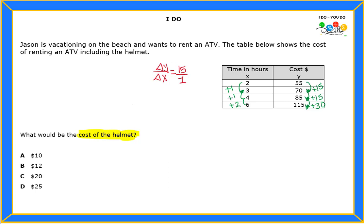Now think about what 15 means. 15 is Y, which is money, and X is hours. So let's see if you can determine a complete sentence for that. This means something like: $15 per one hour.